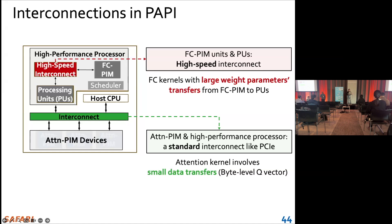Basically, you can think of the high-performance processor as a GPU, and outside we have the attention PIM device. It can use the general interconnect — we can use PCIe or something like CXL.